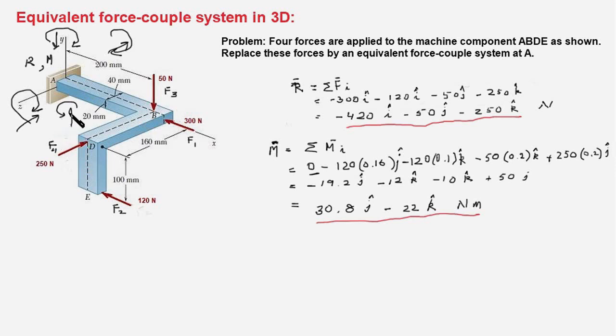And therefore, the moment vector as per right hand rule would be pointing upwards or towards the positive Y axis. And therefore, we have a plus sign here and 250 times the moment arm, which again is this distance, which is 0.2 meters. So, we have 250 times 0.2 J.